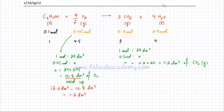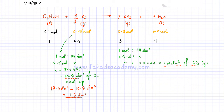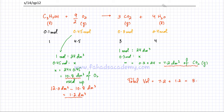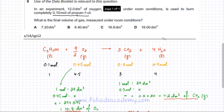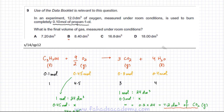So the total volume of gas at the end of the reaction is the 7.2 dm³ of carbon dioxide produced, plus the 1.2 dm³ of oxygen gas that has not reacted. The total volume is 7.2 + 1.2 = 8.4 dm³ of gas. So the correct option is B.